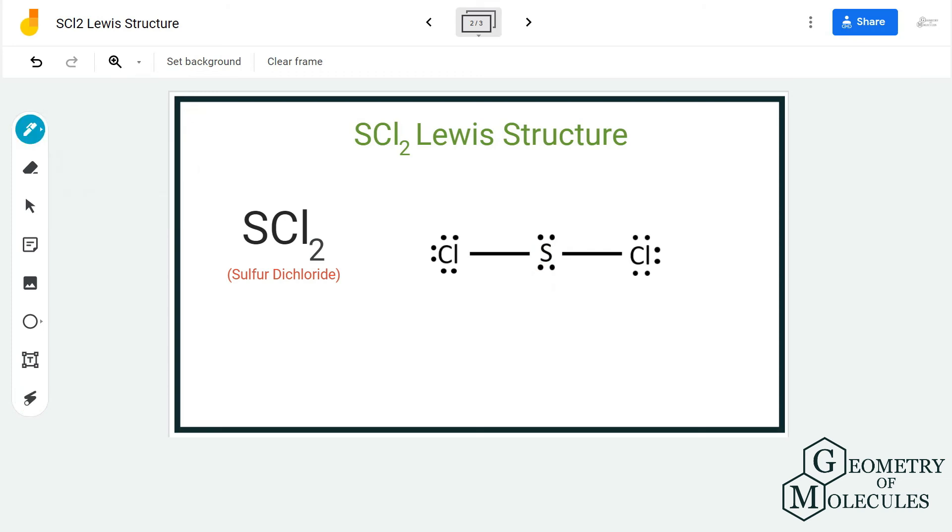Remember to notice the number of lone pairs and bonding pairs of electrons because it can help you find out the molecular geometry and bond angles ahead. This is the Lewis structure of SCl2. It's quite easy and it might seem linear, but to know more about its molecular geometry and polarity, make sure to check the video linked in the description box below.